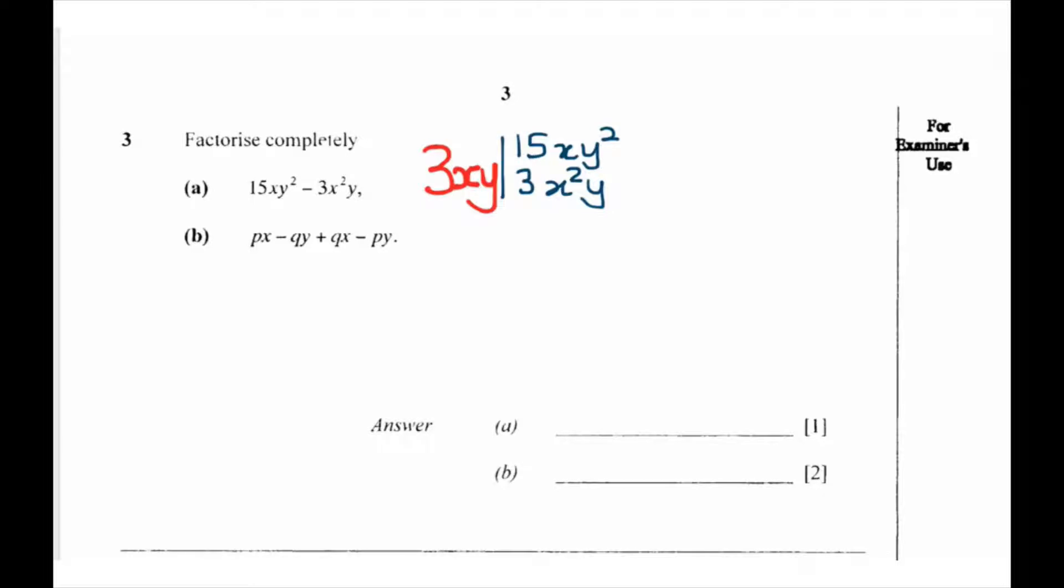Now we divide 3xy into these terms. 3 into 15 is 5, x into x will cancel, and we remain with a y here because y² - we take another y out because we have y outside. So we remain with 5y.